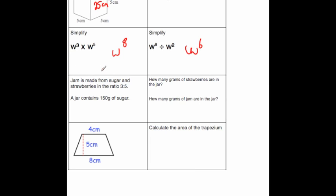Jam is made from sugar and strawberries in the ratio of 3 to 5. A jar contains 150 grams of sugar. How many grams of strawberries and jam are there? So the first thing is to look at the ratio. Sugar to strawberries, and the sugar is the 3. So the 150 grams, that's for sugar, and that's 3 parts in the ratio. So we're going to do 150 grams divided by 3. That's going to be equal to 50. That means there's 50 grams in one part.